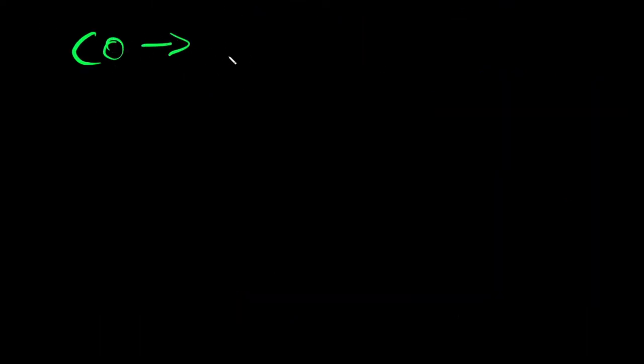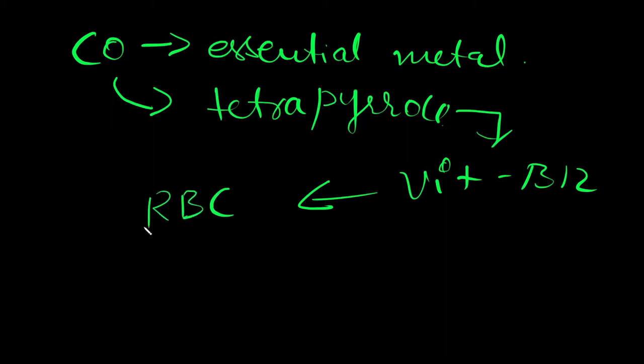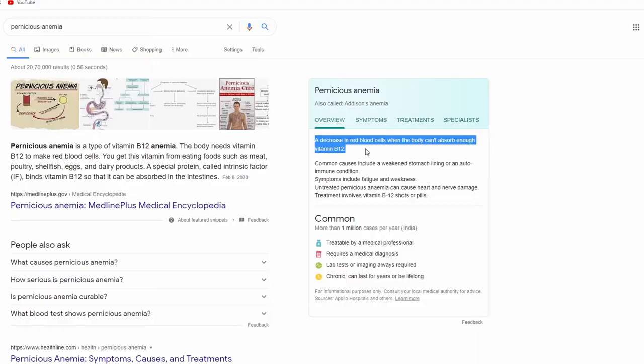Cobalt is an essential metal, that means it is required for normal functioning of the body. Cobalt containing tetrapyrrole ring is a critical component of vitamin B12. Vitamin B12 is required for RBC production and also to prevent pernicious anemia. Pernicious anemia is a decrease in red blood cells when the body can't absorb enough vitamin B12.